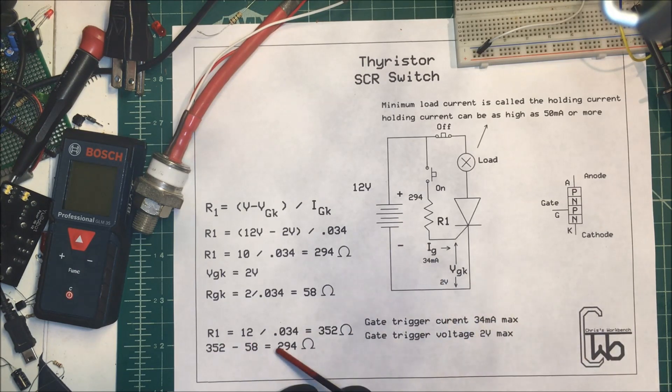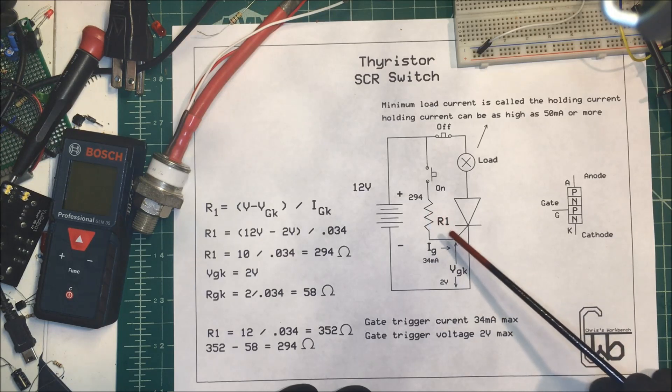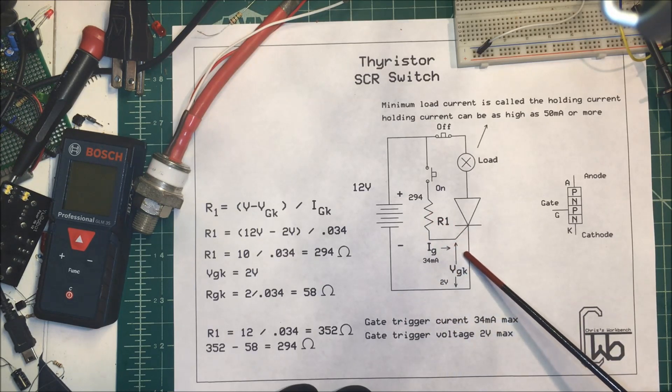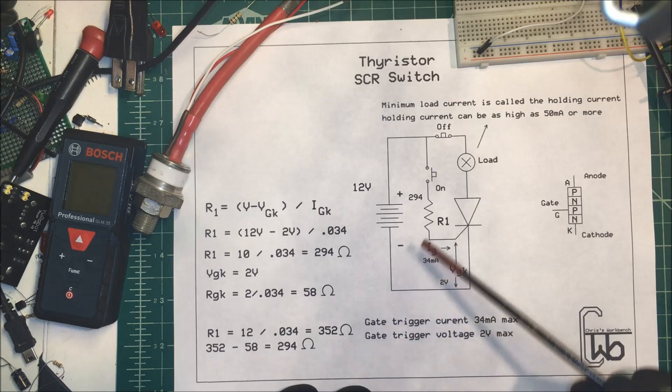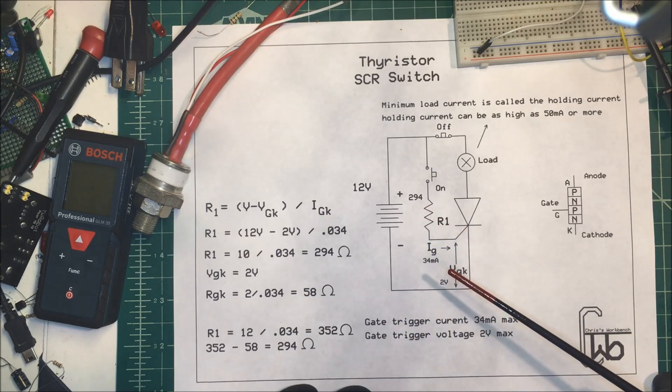Another way to do this: R1 could be equal to the 12 volts divided by the current, and that's going to be 352 ohms. So we know that these two are in series and this is 58 ohms, so we subtract that from our 352 and it comes out to 294 again. So this has to be 294 ohms.